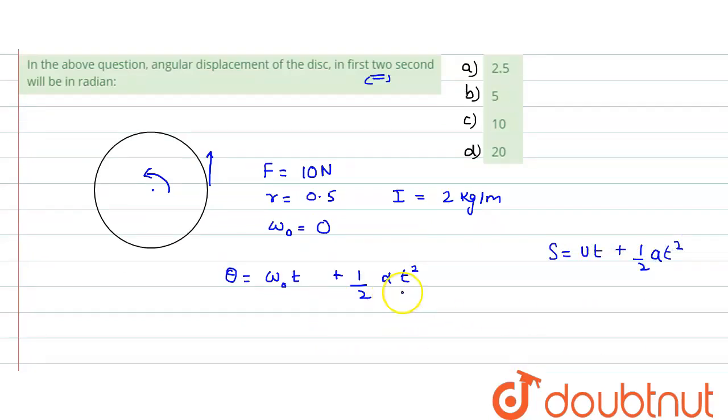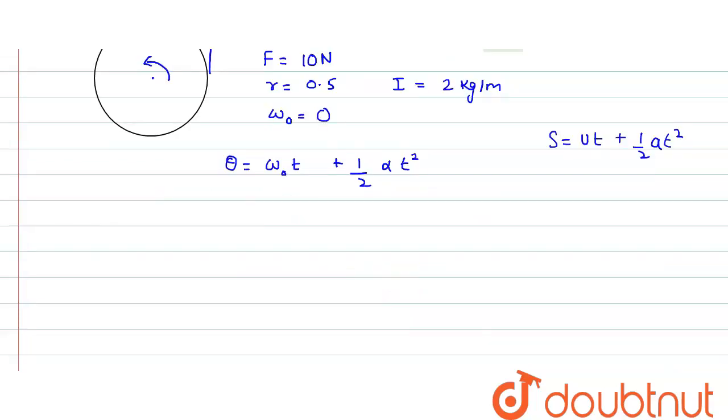Now what is the unknown quantity? α is the unknown quantity. How can we get the value of α? We know that the net torque which is applied, net torque would be equals to I into α, or we can say that α would be equals to τ net divided by moment of inertia value.